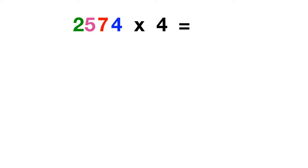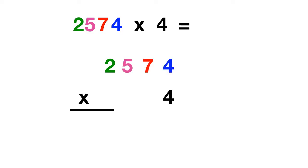Now let's do one of these together. Let's figure out what 2574 times 4 equals. We'll begin by writing out 2574 times 4. Then we can get started by multiplying 4 times these 4 ones. 4 times 4 is 16, which we'll regroup like this.